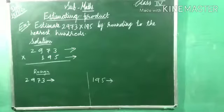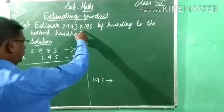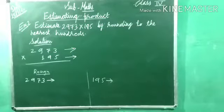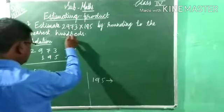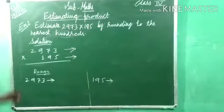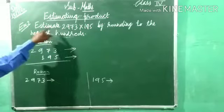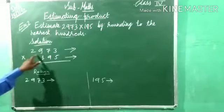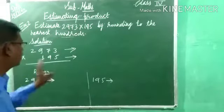Now example number two: estimate 2,973 multiplied by 195 by rounding to the nearest 100. Write this question: 2,973 multiplied by 195.